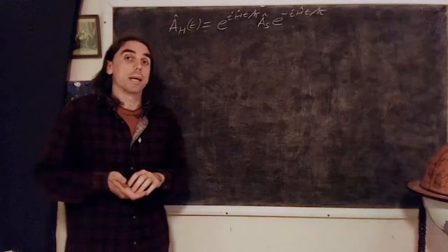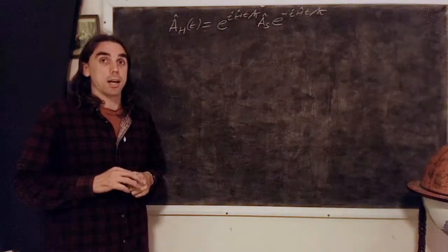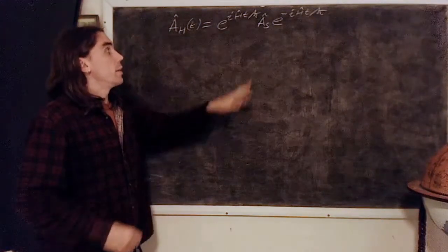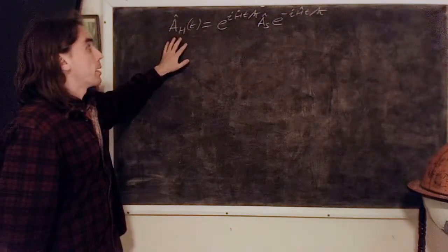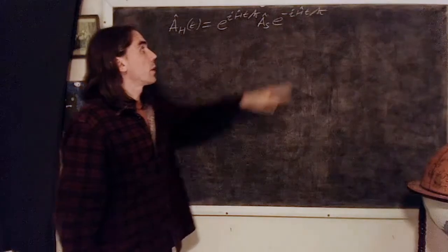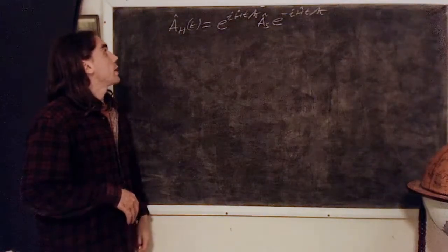You can have an explicit time dependence even in the Schrödinger picture—it doesn't make things too much more complicated—but we're not going to consider that case within this course. So these operators are always time independent and the only time dependence in the Heisenberg picture is coming in in this form.